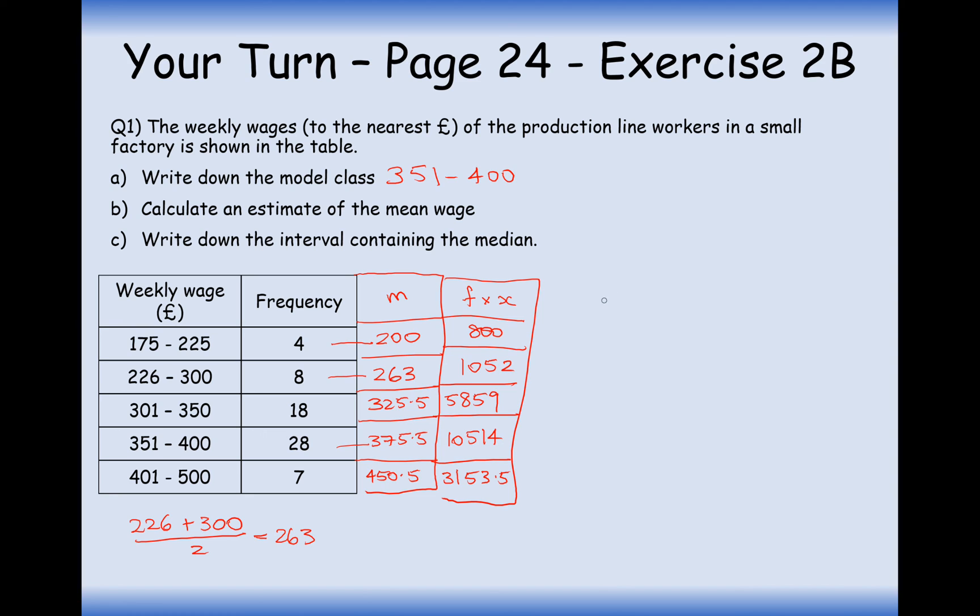Okay, so our formula to work out the mean is the sum of fx over the sum of f. So what we need to do is we need to now add up all of these f times x's, which gives us 21378.5. So this is the sum of fx. So remember, fx here is not representing f of x. It's not a function of x. It's just the frequency times data value.